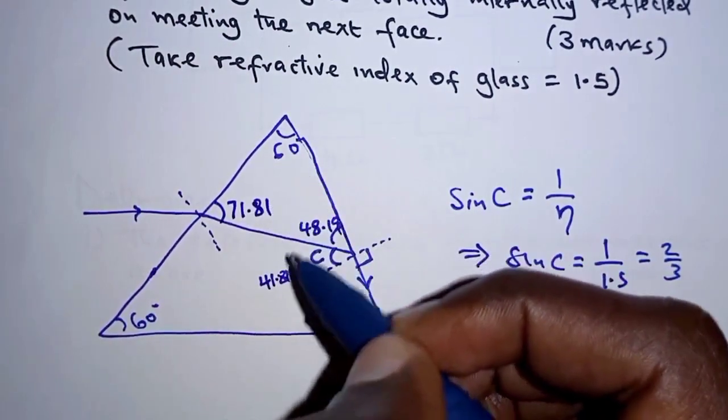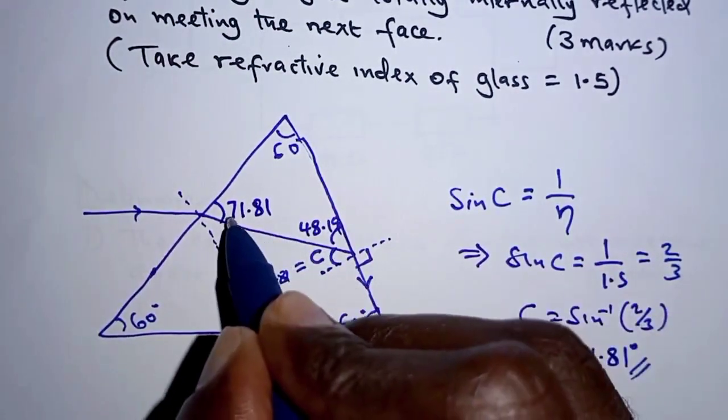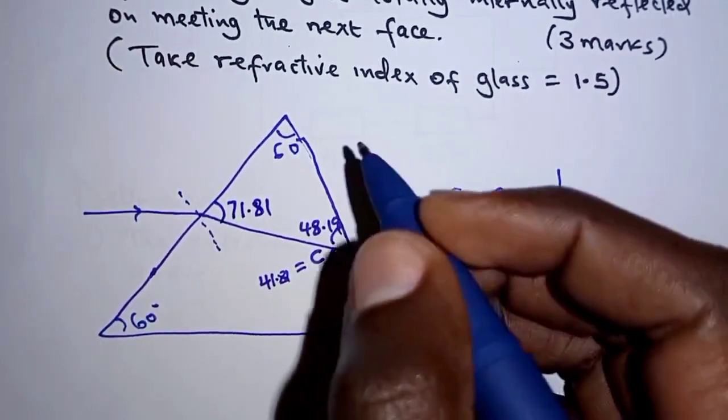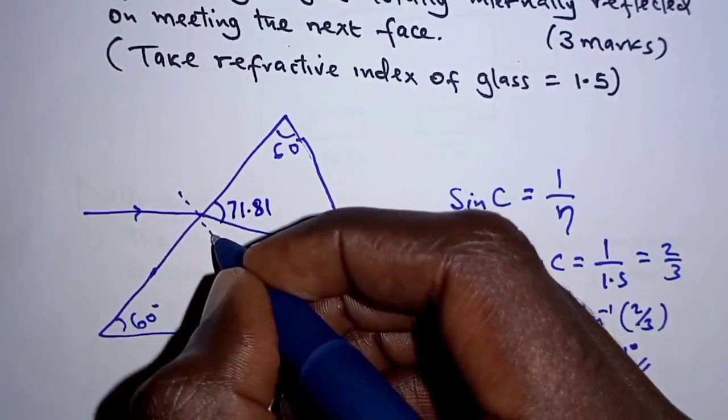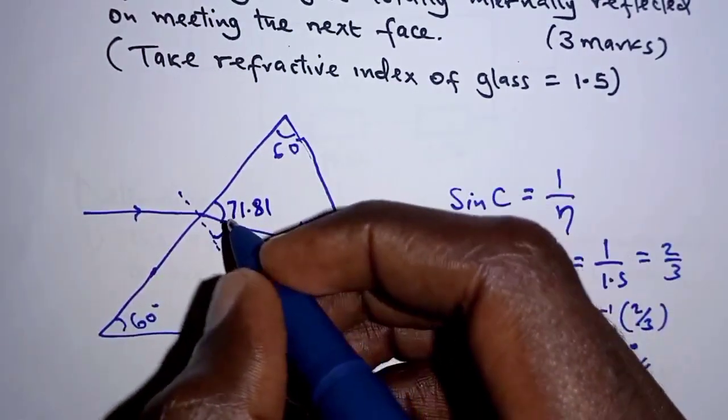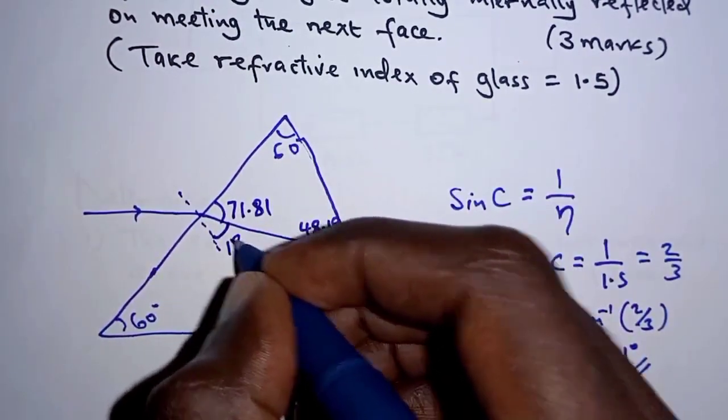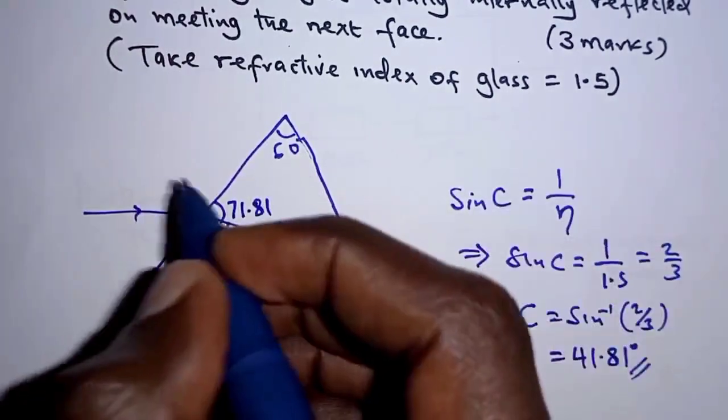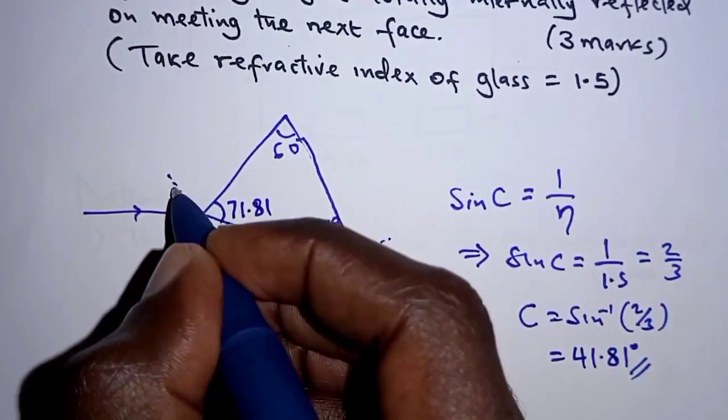And that therefore means that the angle of refraction on this surface is 18.19. And therefore the question required us to get the angle of incidence here.